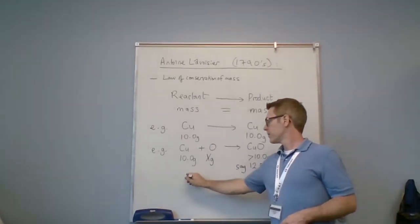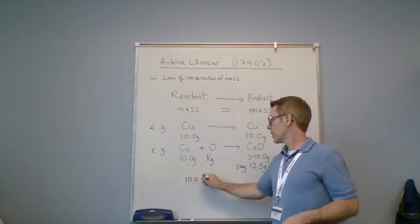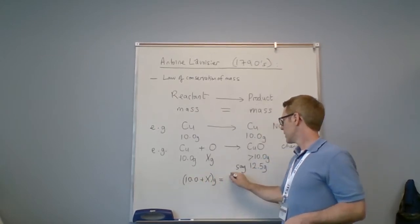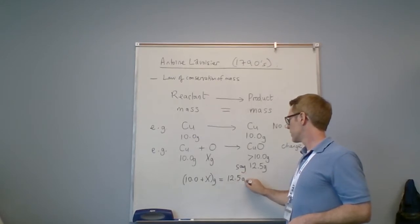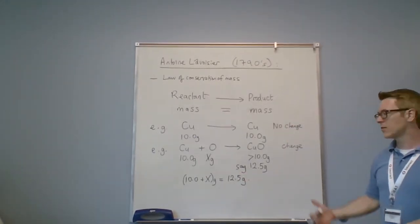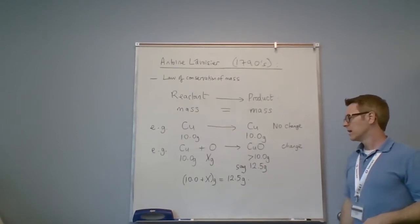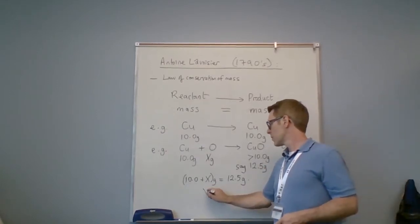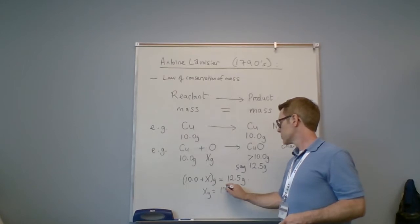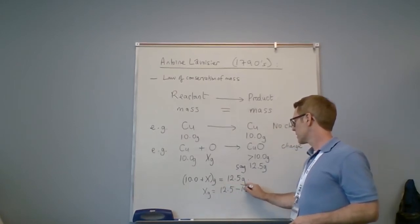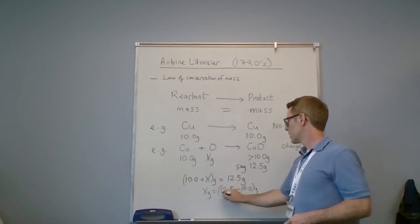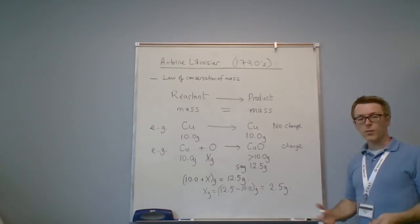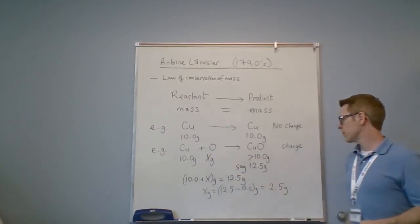Well, I would know that 10 plus x grams is 12.5 grams. Because I know mass is always conserved, I can make a simple algebraic formula. So 10 plus x is 12.5. I can then just subtract 10 from both sides. So x grams equals 12.5 minus 10 grams, which is 2.5 grams. And I've again obeyed conservation of mass. So 10 plus 2.5 equals 12.5.